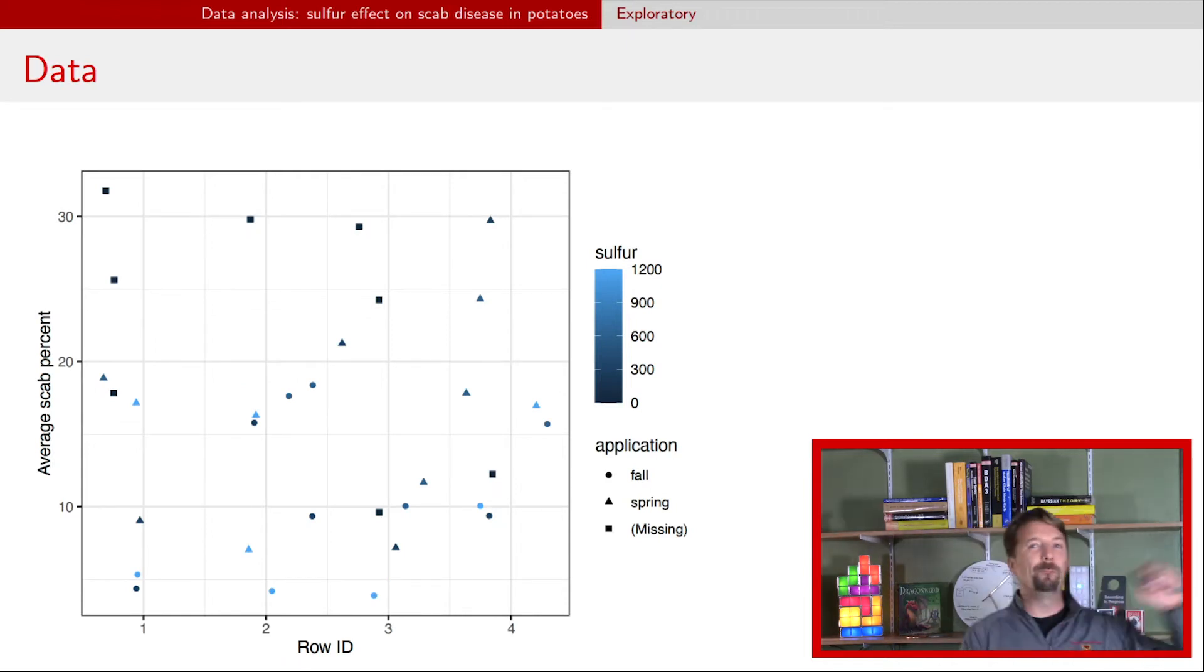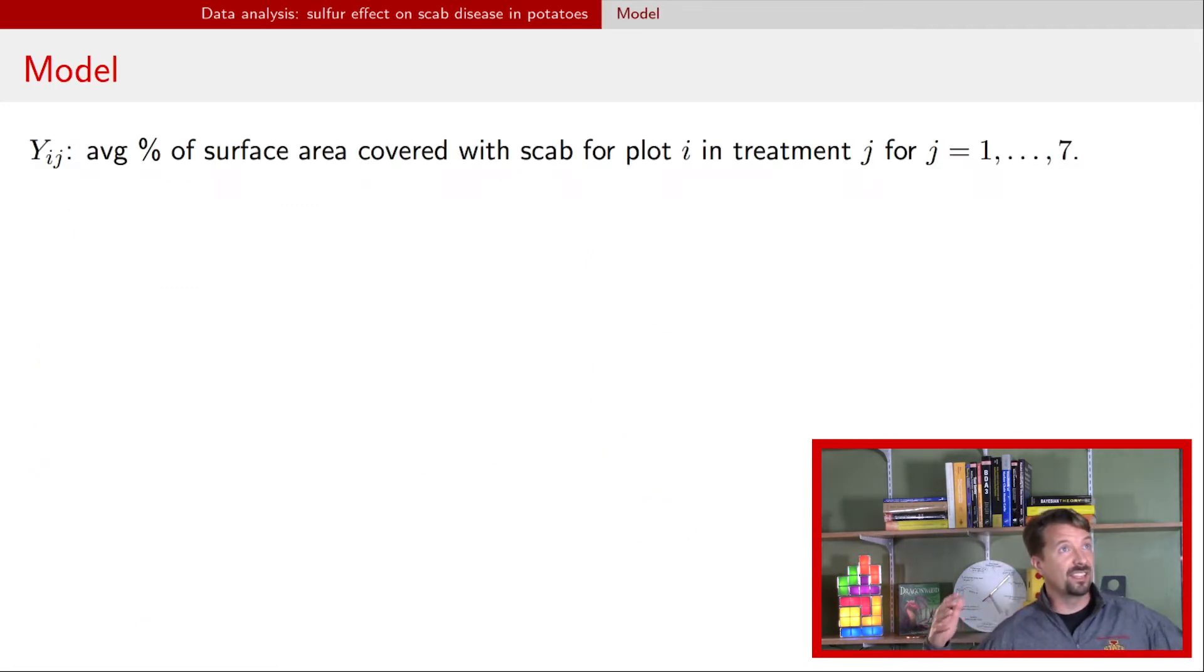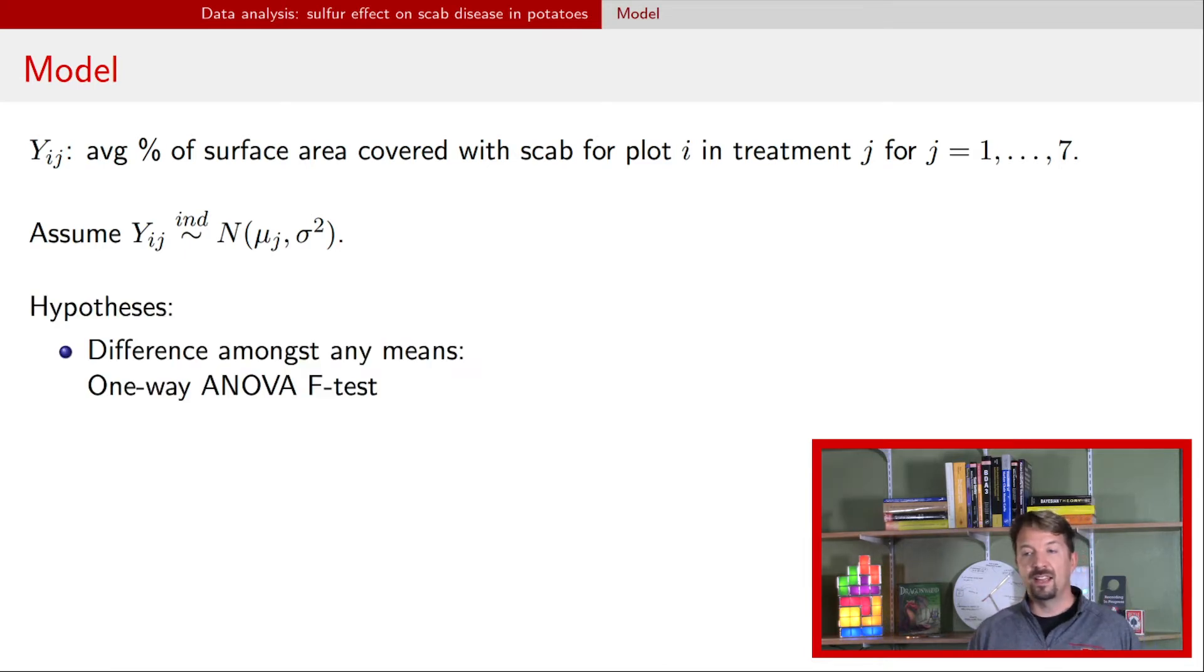All right, now let's get back to that topic at hand. The topic at hand is trying to get contrast to answer these scientific questions of interest. In order to do so, we're going to construct a model. Here, we're going to go with the ANOVA model. J is going to represent those treatments, so it's going to be numbered one to seven. And our response then is the average scab percent. We have a normal model, same assumptions as usual. And now these are the kinds of scientific hypotheses that we want. Is there any difference amongst any of these means? And we're going to answer that first off with a one-way ANOVA F-test.